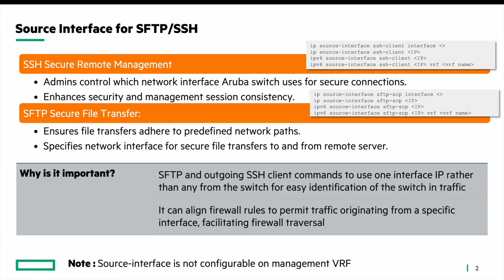Here is an example of how the CLI would look from the 10.13 update. The CLI command is: IP source-interface SSH client, and you specify which particular interface you are applying it to. Or you can also specify the IP directly that you want to define as the source interface. This is supported in both IPv4 and IPv6 using the same command, and you can also configure it with a VRF name.